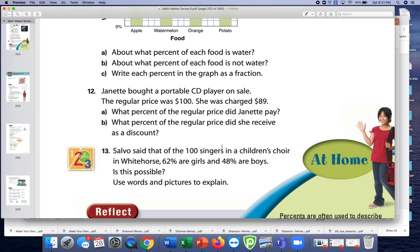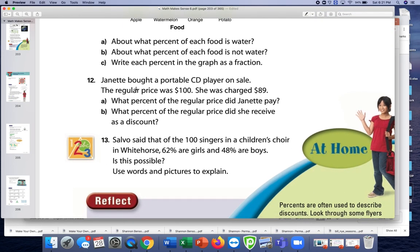Number 12, Jeanette brought a portable CD player on sale. The regular price was $100. She was charged $89. What percent of the regular price did she pay? Well, this is pretty easy since the original price is 100. So she paid 89% of the original costs.